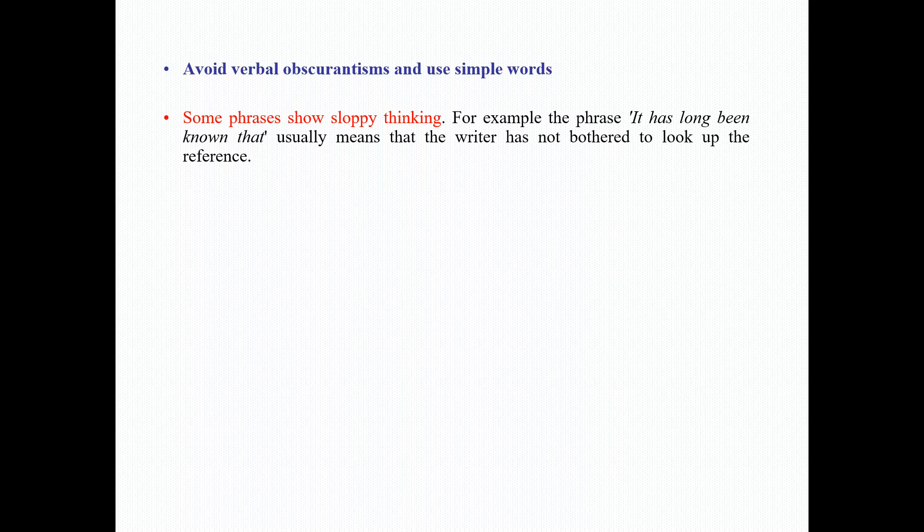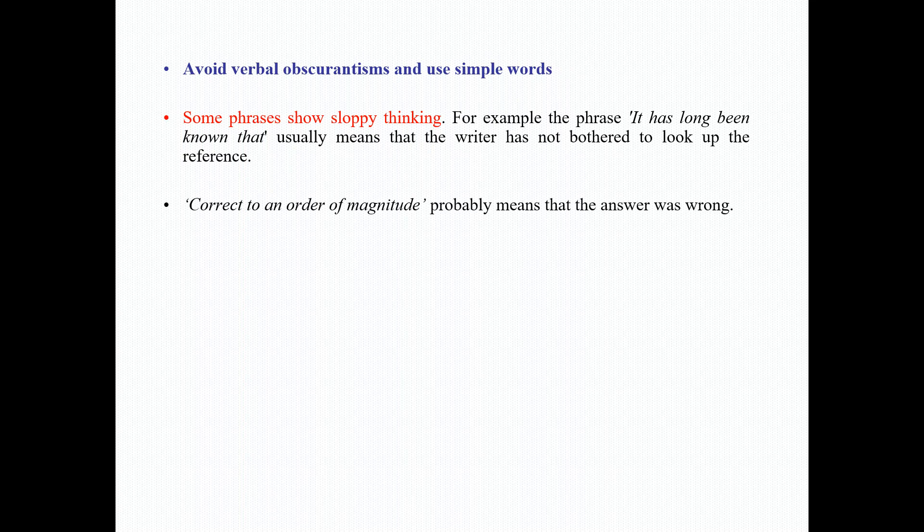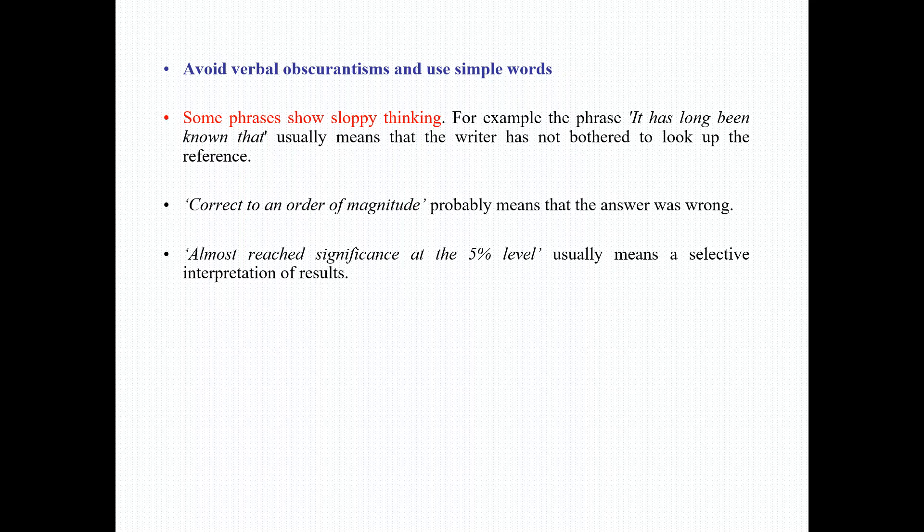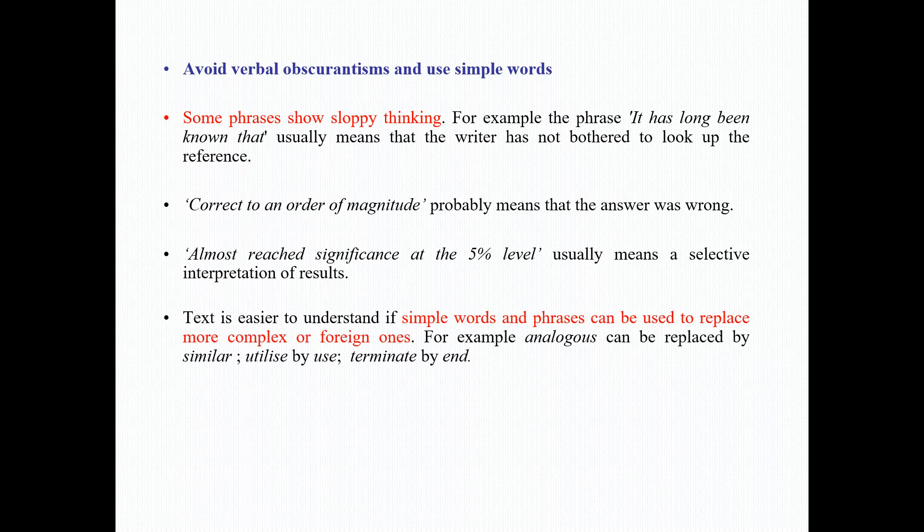Avoid verbal absurdism and use simple words. Some phrases show sloppy thinking. For example, the phrase 'it has long been known that' usually means that the writer has not bothered to look up the reference. 'Correct to an order of magnitude' probably means that the answer was wrong. 'Almost reached significance at the 5% level' usually means a selective interpretation of results. Text is easier to understand if simple words and phrases can be used to replace more complex or foreign words. For example, 'analogous' can be replaced by 'similar,' 'utilized' by 'use,' 'terminate' by 'end.'